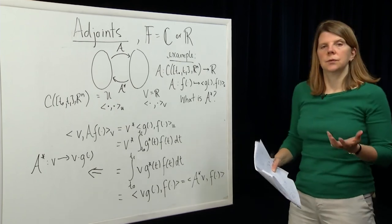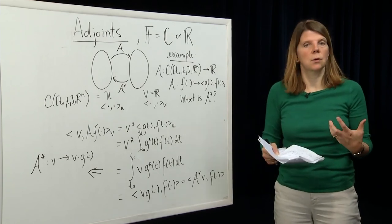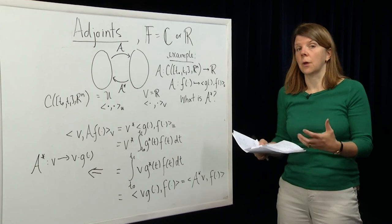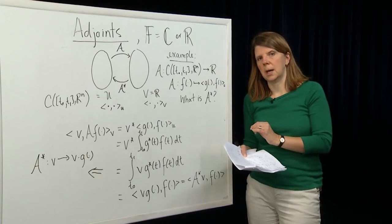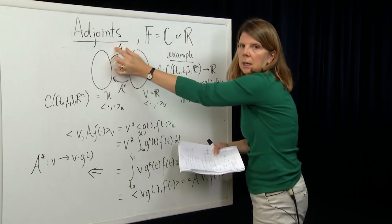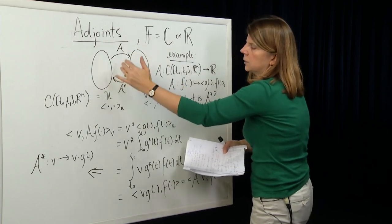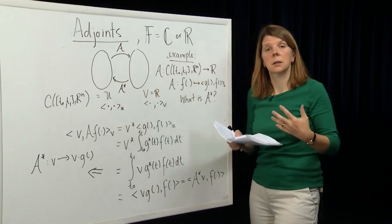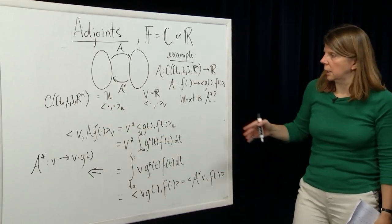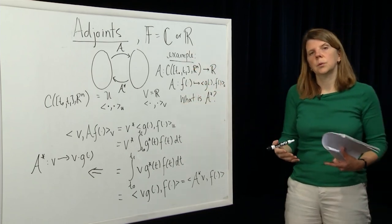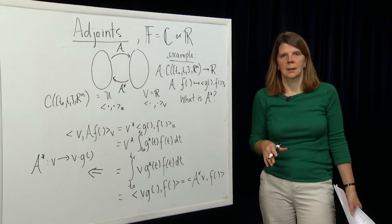So what have we done in this module? Based on our definition of inner products, we've defined what it means for vectors to be orthogonal, used that to define orthogonal complements of subspaces, and looked at properties of orthogonal complements. The last — and very important — thing was to define the adjoint map: given a continuous linear map A, we can derive an adjoint map A*, which also turns out to be continuous and linear, defined through the inner product. We illustrated how to derive the adjoint given a map and the inner products on the underlying spaces. Thank you very much.